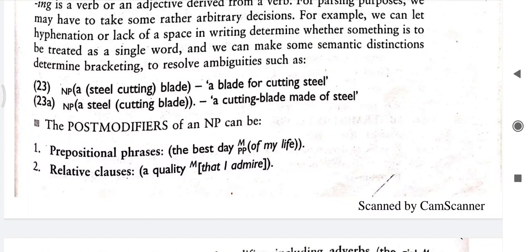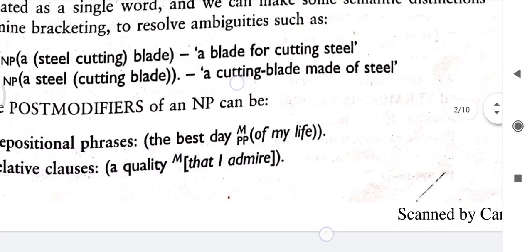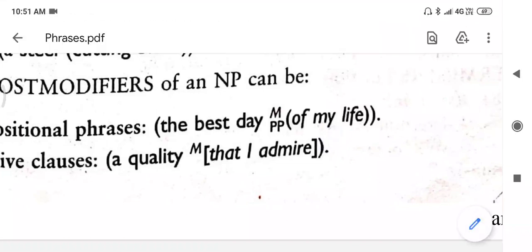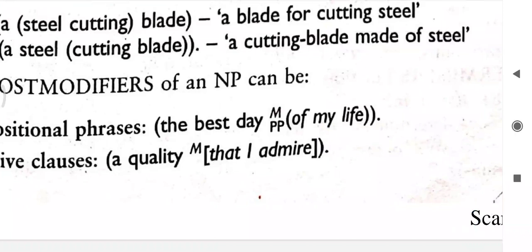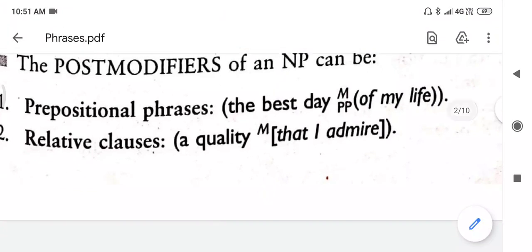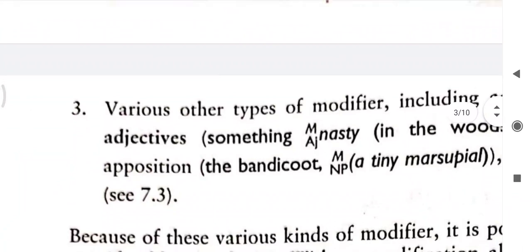A noun phrase may be post-modified by a prepositional phrase. For example, 'the best day of my life' — 'the best day' is the noun phrase and 'of my life' is a subordinate prepositional phrase beginning with 'of'. Then we have relative clauses as post-modifiers: 'a quality that I admire' — 'a quality' is a noun phrase and 'that I admire' is a relative clause where 'I' is subject, 'admire' is predicate, and 'that' is relative pronoun.